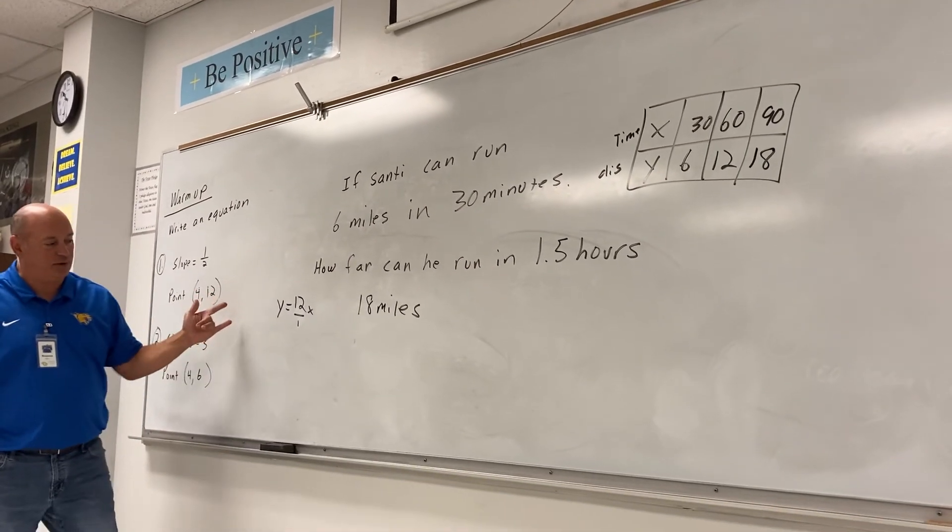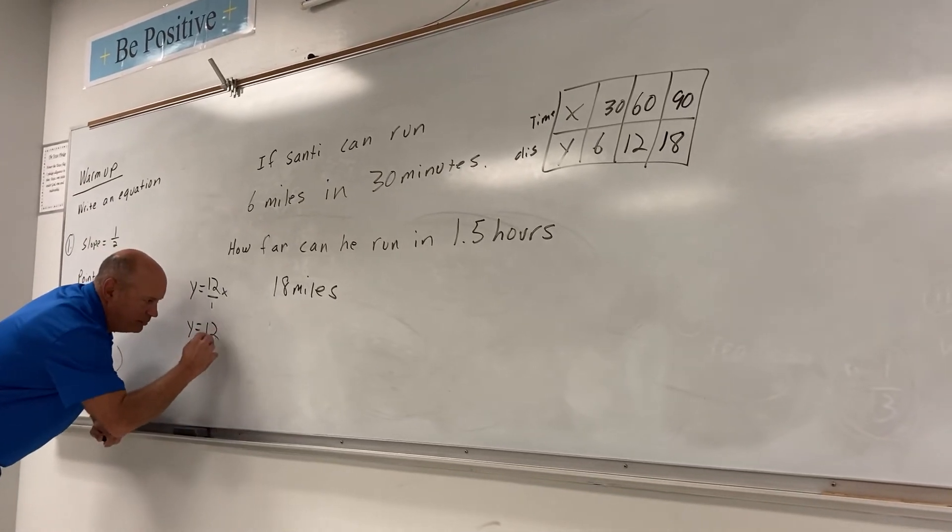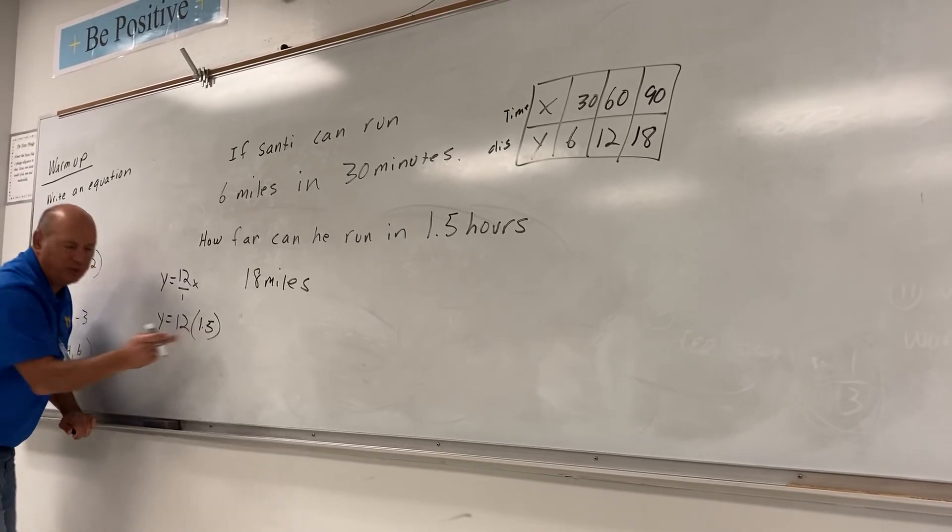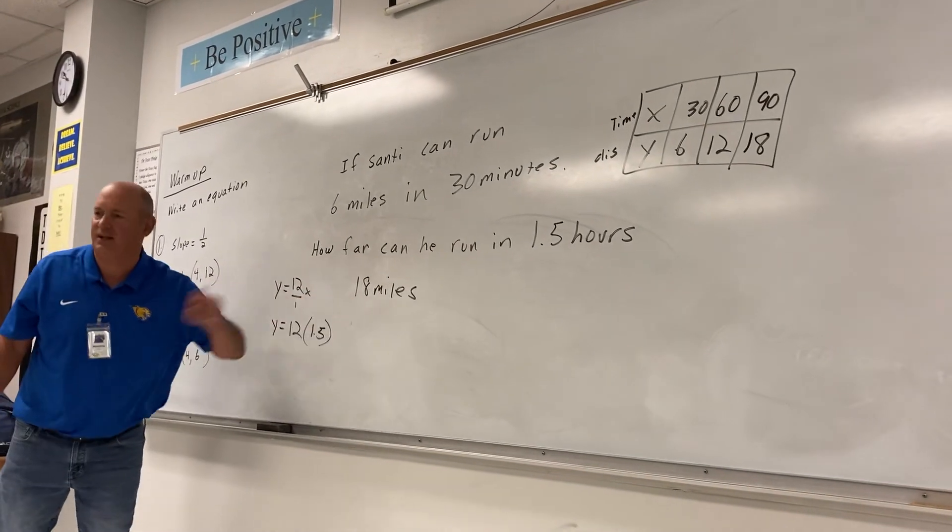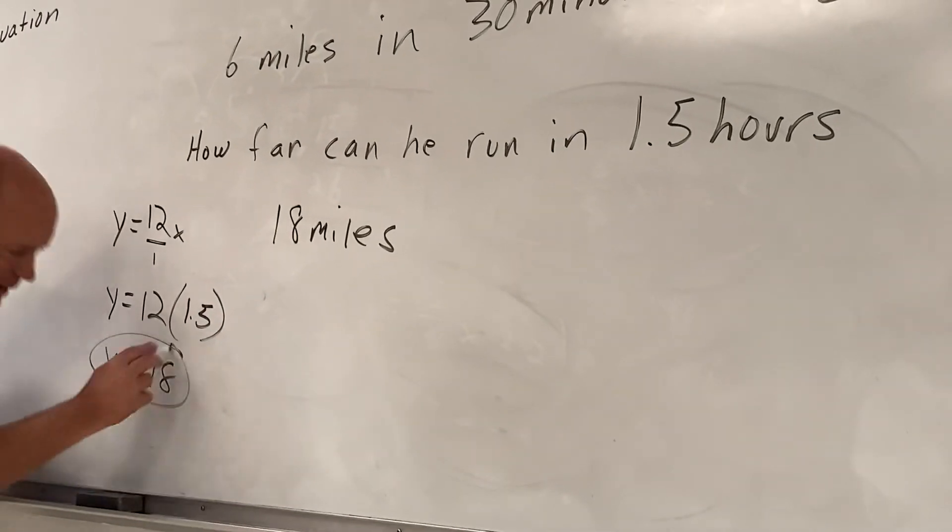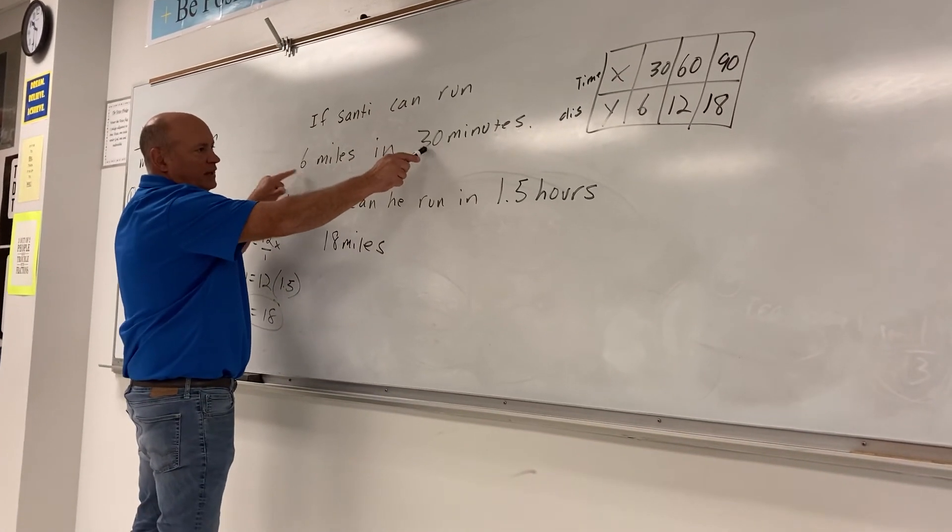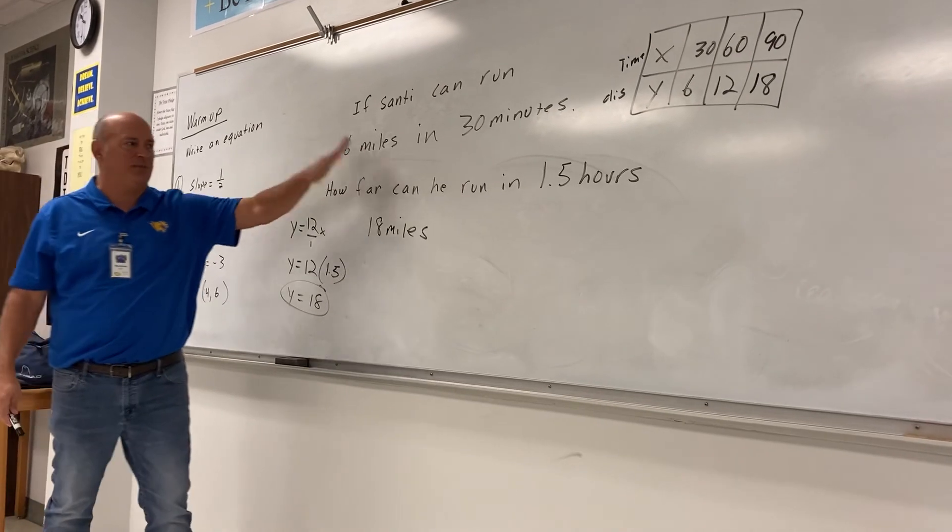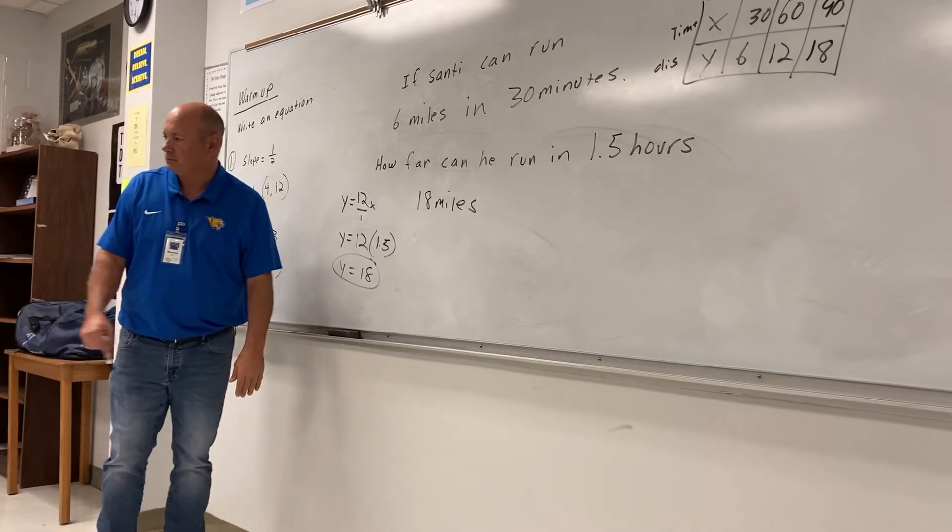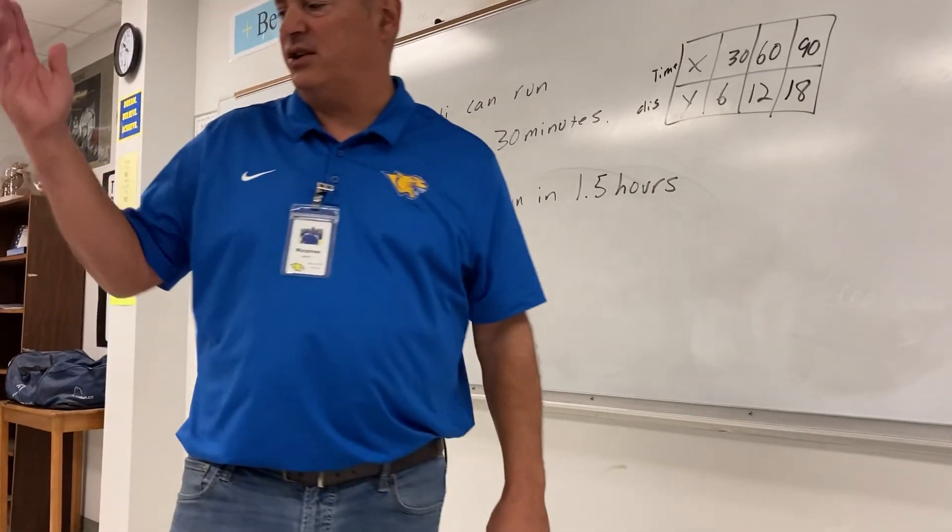Yes. So for this problem, the equation would be y equals 12x. And then watch this. Pick up your calculator. If I plug in 1.5 hours, multiply 12 times 1.5. If we did it right, we should get the correct answer of 18. Did we get 18? So that problem's slightly tricky. But here's the key. You convert this, what they give us, into the slope. If he can do six miles in 30 minutes, then he can do 12 miles in one hour. Does that make sense? Yes. All right. Questions? The rest of it, you shouldn't have any problems.